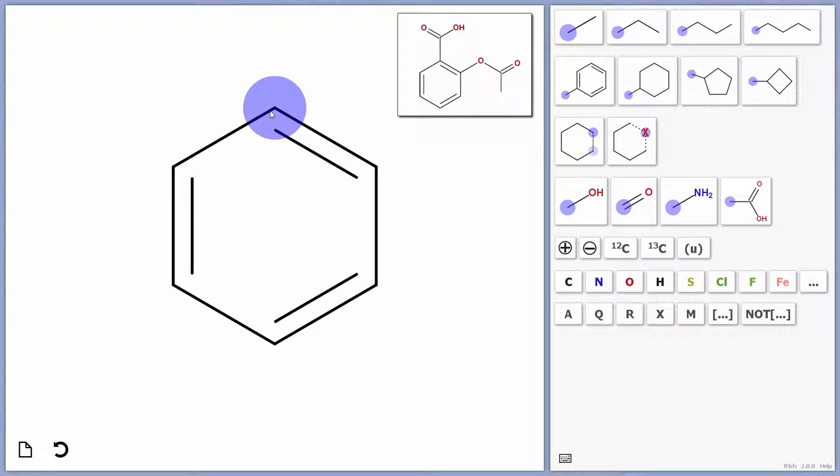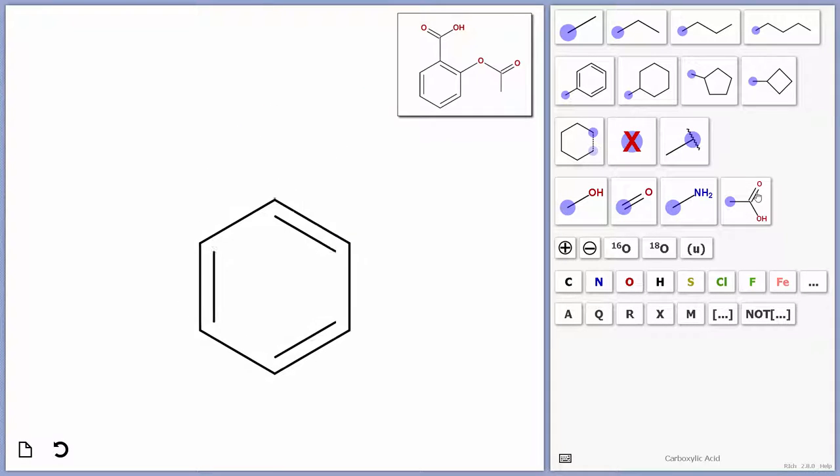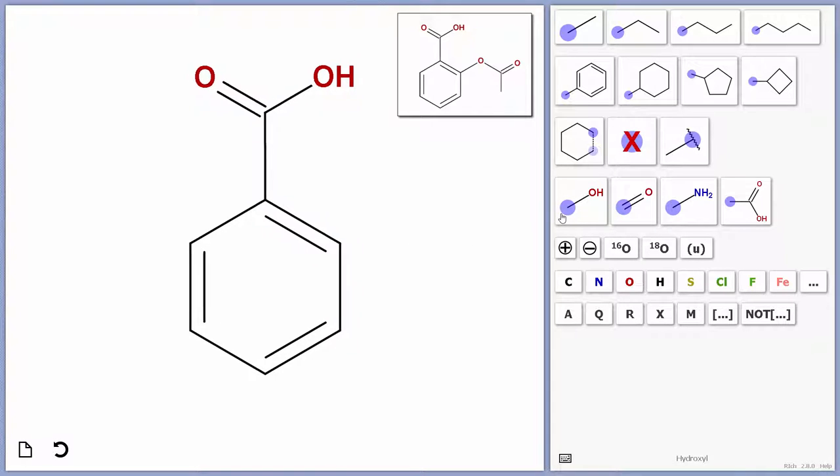Then I'm going to select the atom I wish to attach a carboxylic acid group to. I'm going to select the carboxylic acid, and that's the first part of the structure done. Next, I'm going to select the second position on the ring I wish to attach something to, and I'm going to select the hydroxyl group.